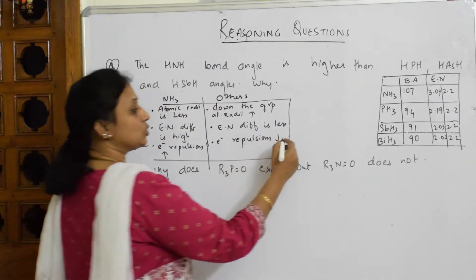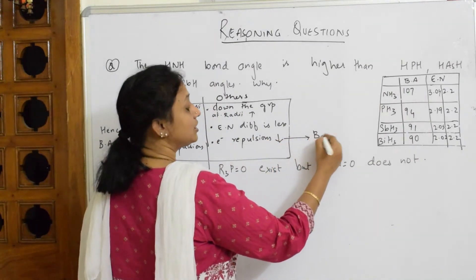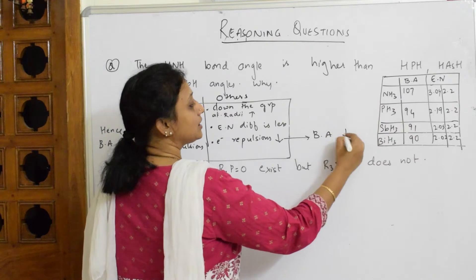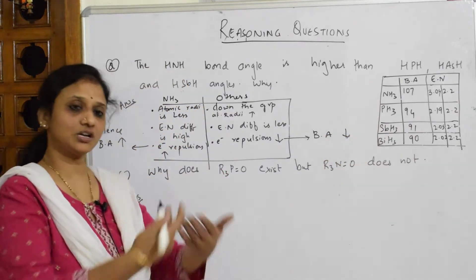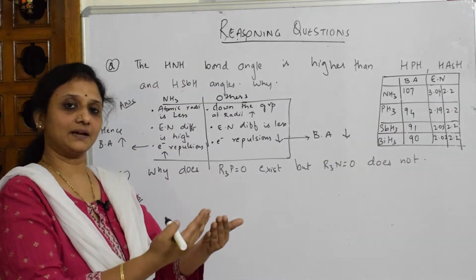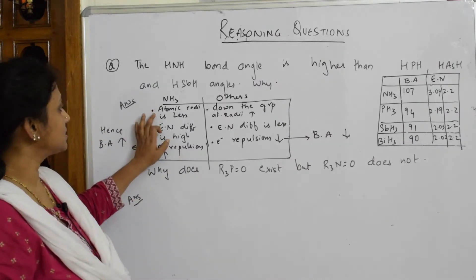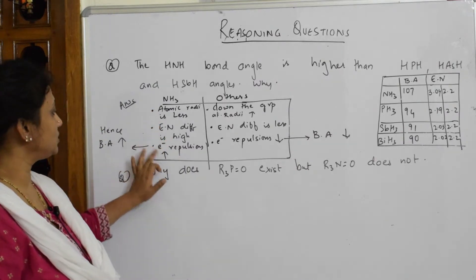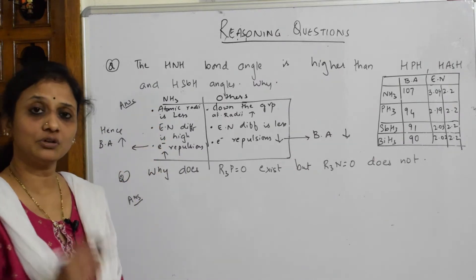When electron repulsions are more, the bond angle increases — that is why it is 107° in ammonia. When electron repulsions are lower, the bond angle reduces. So the decreasing trend down the group is explained. These are the three keywords you have to mention in your paper.